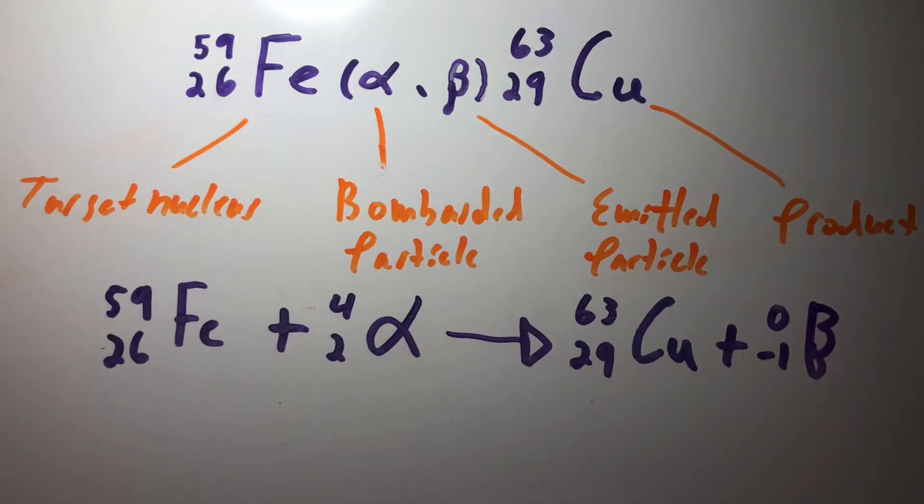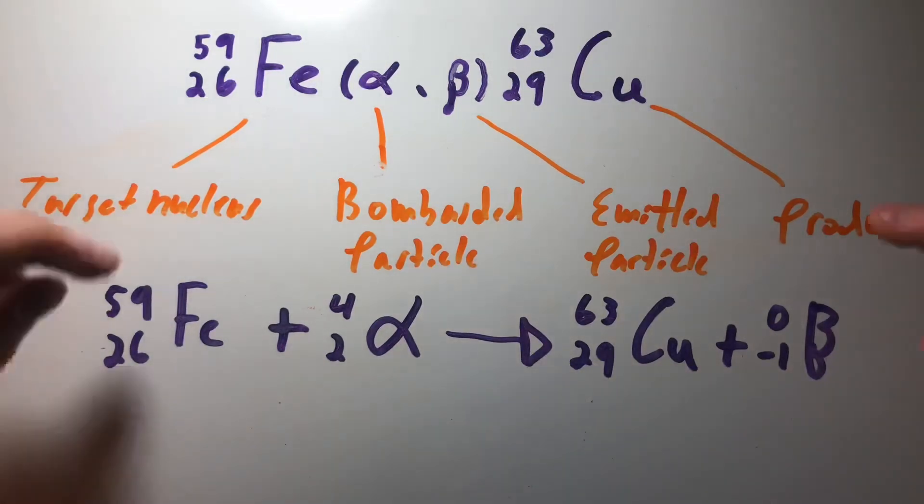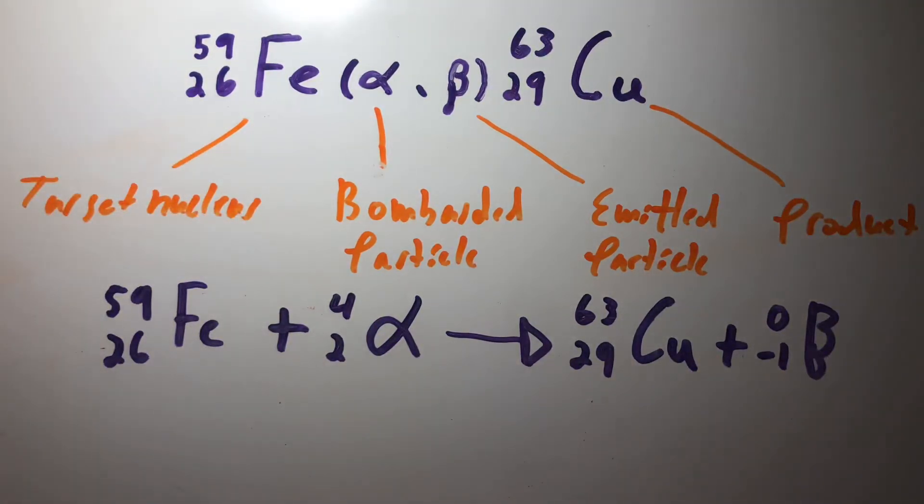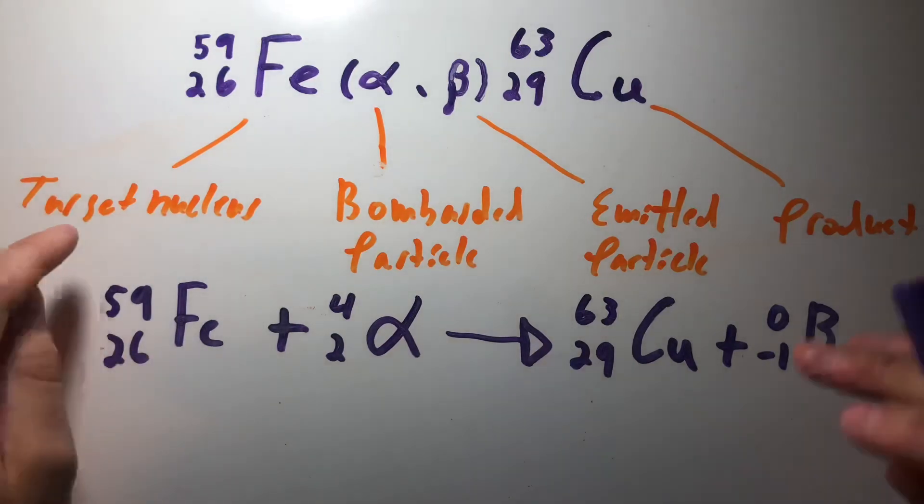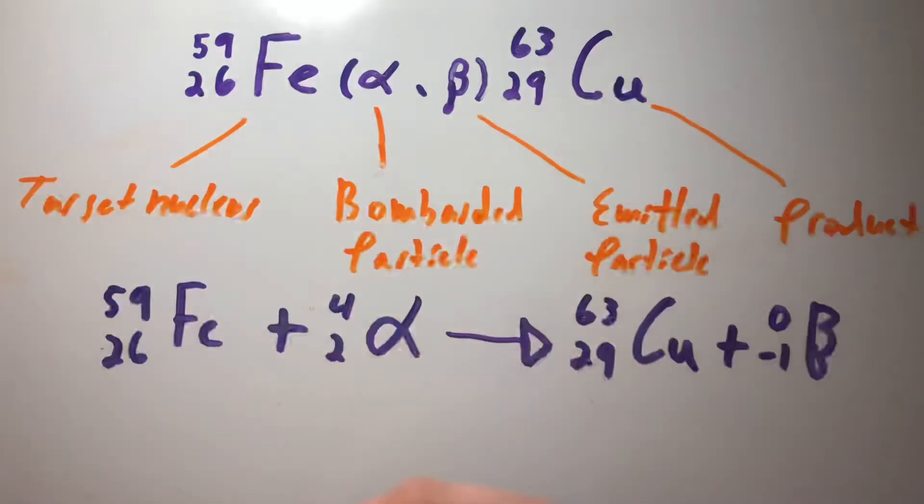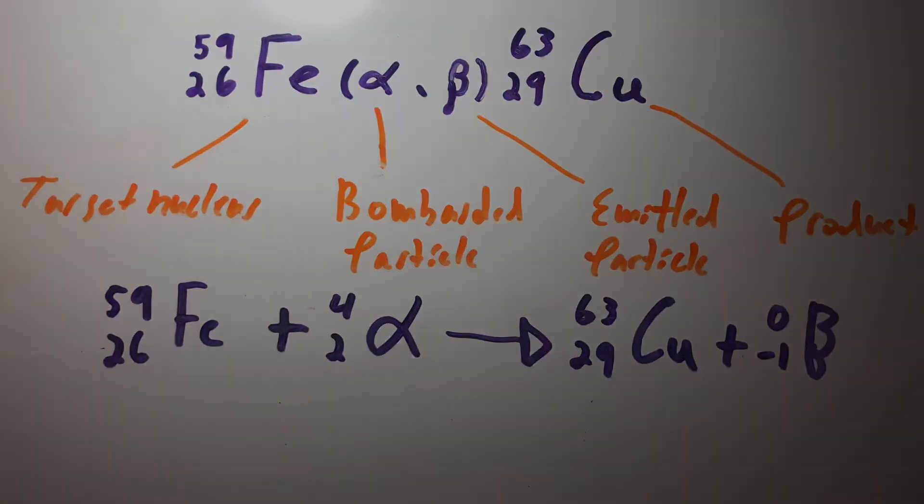And that is it. This is our nuclear reaction for the given nuclear summary. I hope this helped everyone out. It's pretty simple once you break each portion of the nuclear summary down.